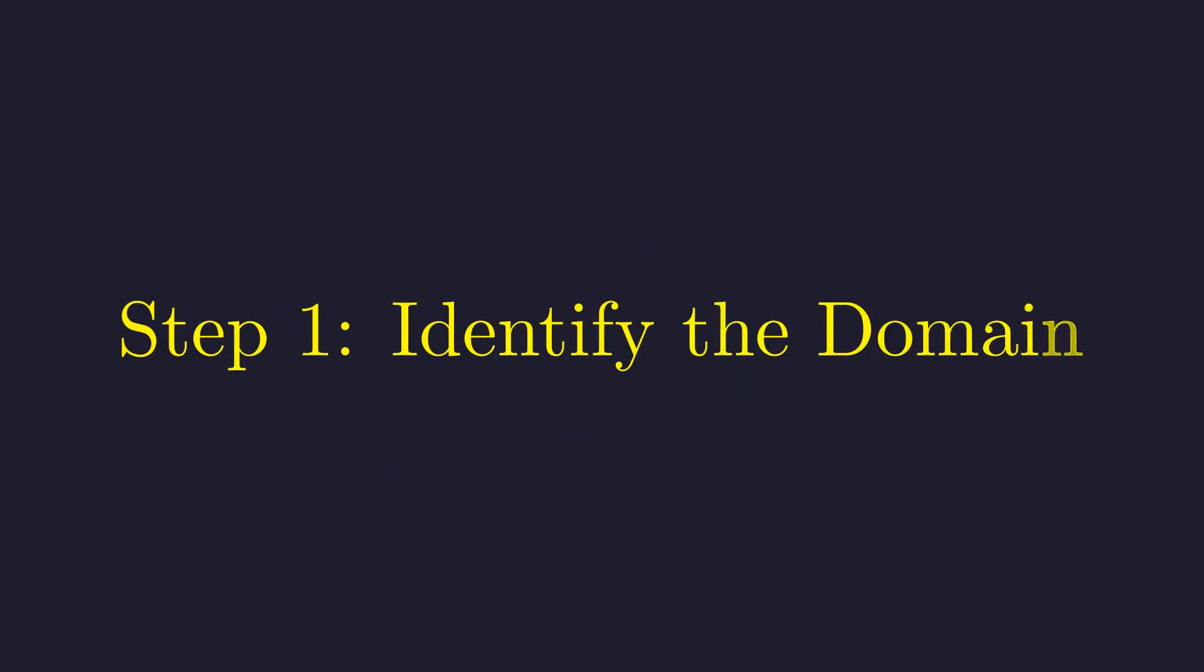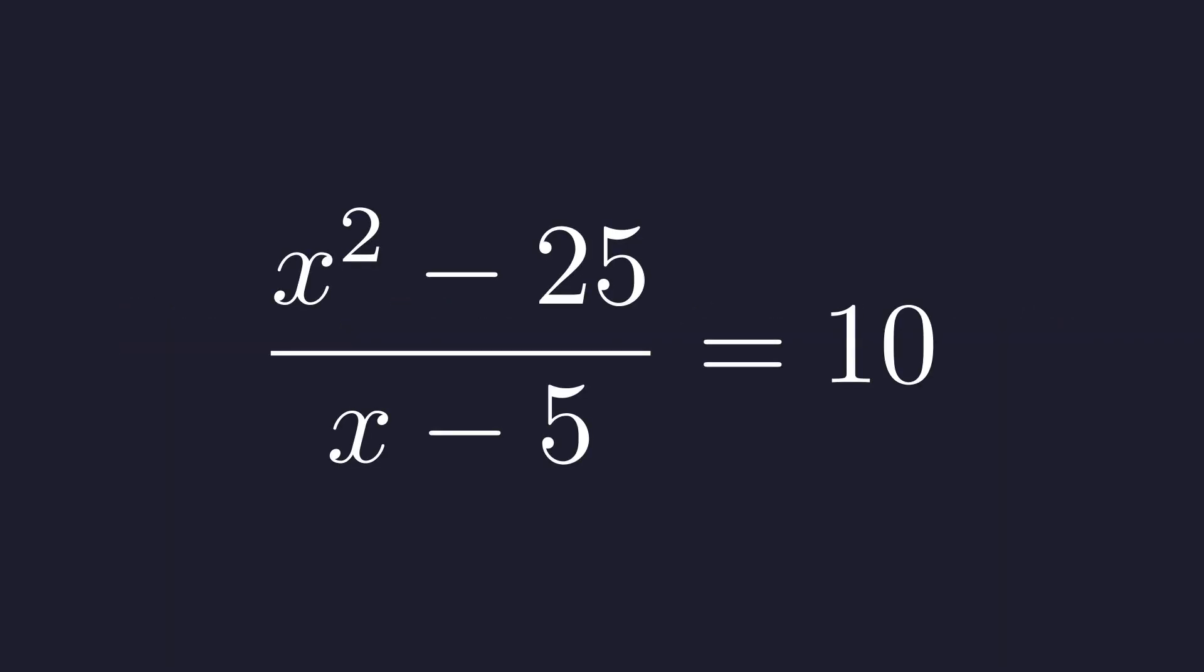Before we dive into solving this, let's be smart about it. With rational equations like this, we need to identify where things could go catastrophically wrong. We have this fraction here, and there's one golden rule with fractions: you can never, ever divide by zero.